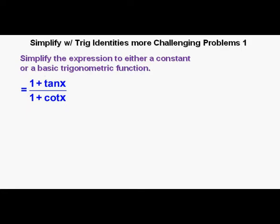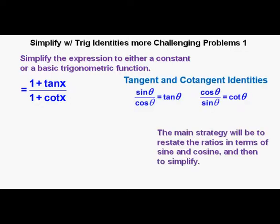Here's the first problem. I strongly encourage the viewer to pause the video and work ahead as much as possible to get more out of it. Simplify the expression to either a constant or a basic trigonometric function. We have (1 + tan x) / (1 + cot x). The main strategy will be to restate the ratios in terms of sine and cosine, and then simplify from there.